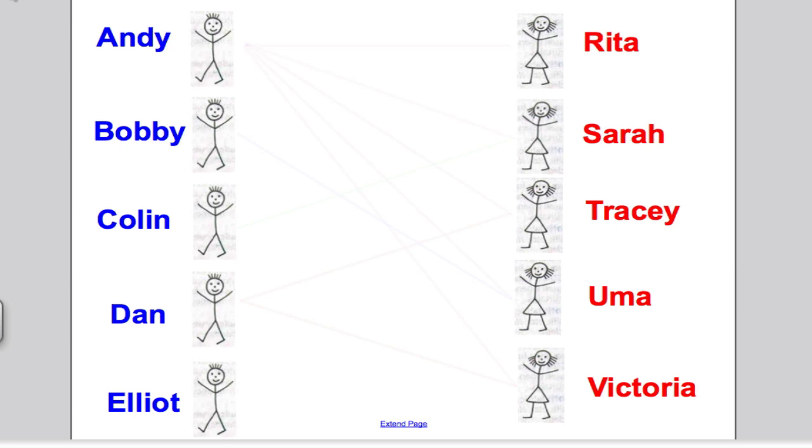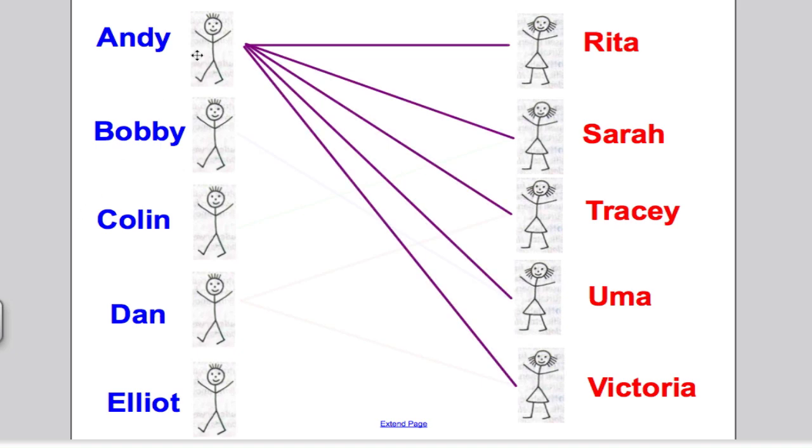First of all, here are Andy, Bobby, Colin, Dan, and Elliot, and Rita, Sarah, Tracy, Uma, and Victoria. We said Andy was a lucky boy and he was compatible with all the girls. So we might draw a line from Andy to each of the girls to indicate compatibility.